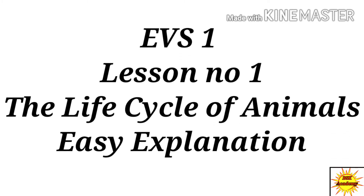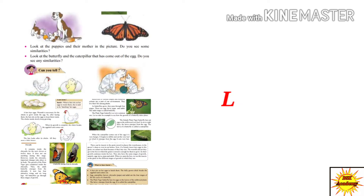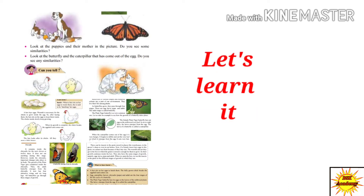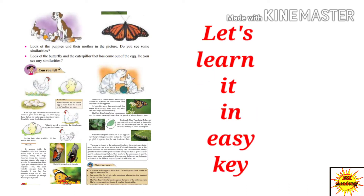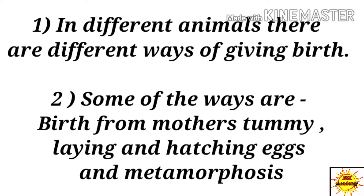Today we will learn EVS lesson number 1: The Life Cycle of Animals. In different animals there are different ways of giving birth. Some of the ways are: birth from mother's tummy, laying and hatching eggs, and metamorphosis.